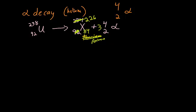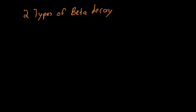Okay, so that was alpha decay. Let's talk about the two types of beta decay. And what are these two types? We have beta negative and beta positive.